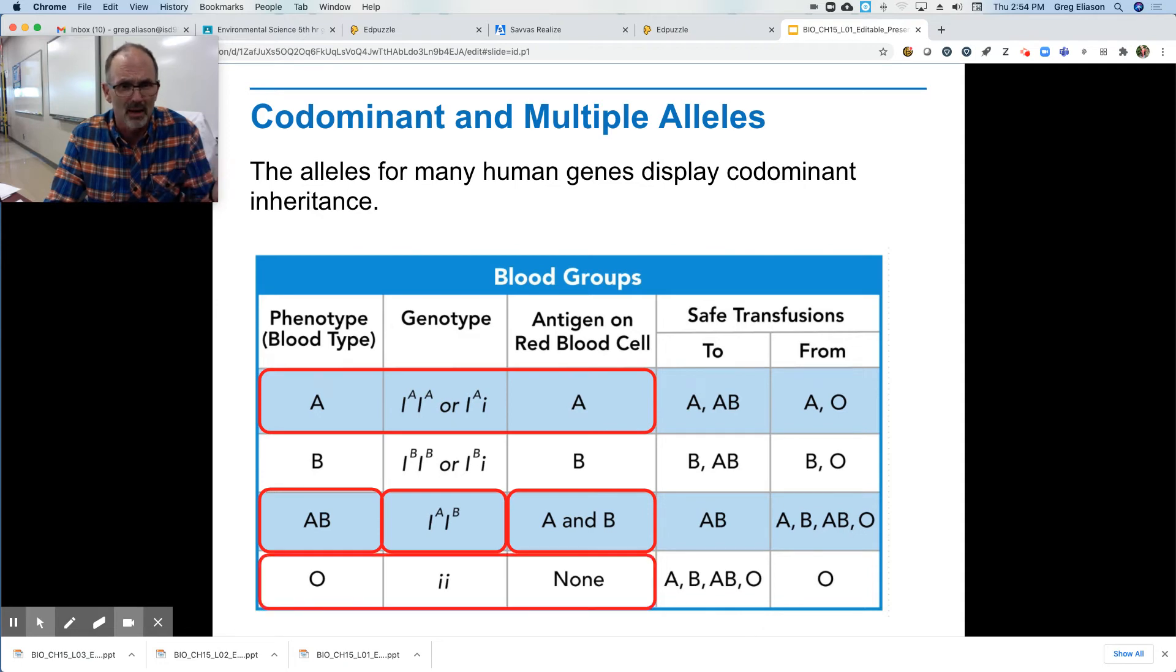So there's our A's. And our O then does not have any of those antigens on the blood type. So our immune system does not respond to that because it doesn't recognize it as foreign.